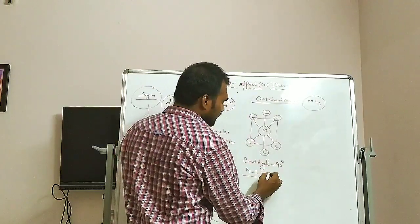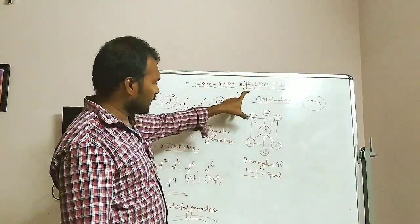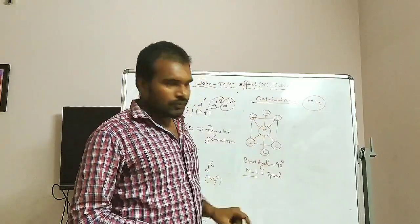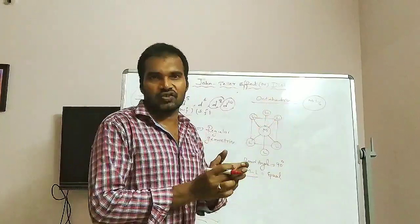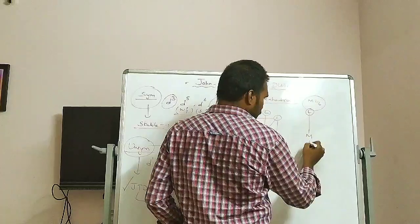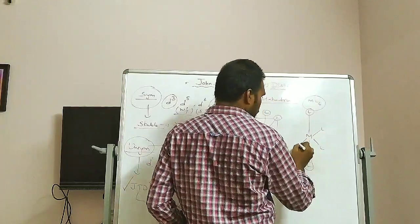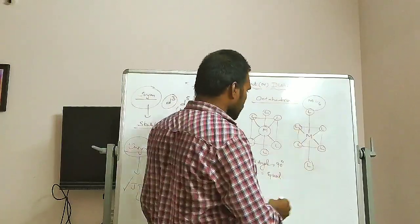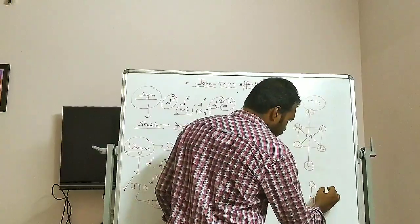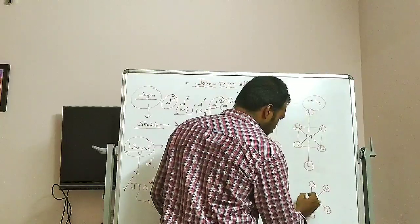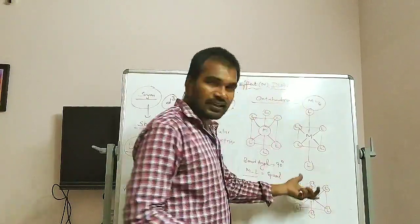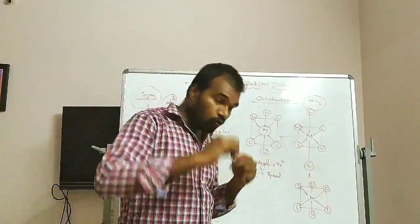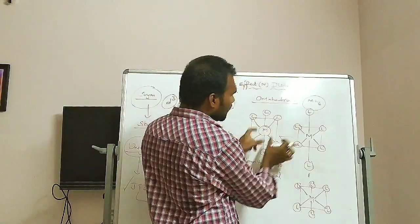This is a regular octahedral structure. In the distorted case, either the axial bonds elongate or compress. An elongated octahedral complex is when the axial metal-ligand bonds are longer than the equatorial ones. So I think you have a clear idea of the difference between regular and distorted geometries.